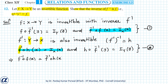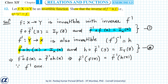This gives me f inverse of f inverse of f(x) equals f inverse of h(x). Because f inverse is invertible, f inverse is also one-to-one, so this implies f(x) equals h(x) for every x in X.